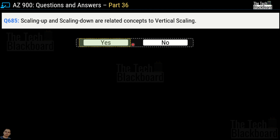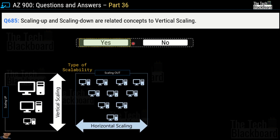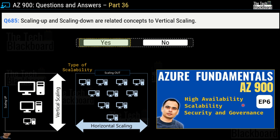Scaling is a very important concept, relevant not just for Azure but also for AWS and Google GCP. If you want to understand scaling in more depth — vertical scaling, horizontal scaling — watch episode 6 of our Azure Fundamentals series. Besides scaling, you'll also understand high availability, security, and governance. It's a free series, fully synced with Microsoft Azure Fundamentals latest syllabus, and covers all the concepts behind questions 682 to 685 in a single video.